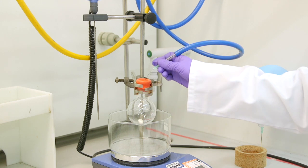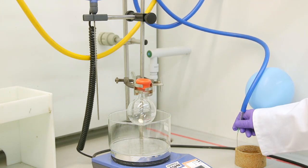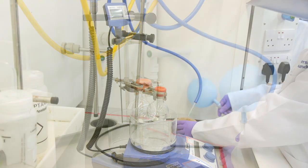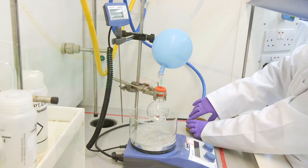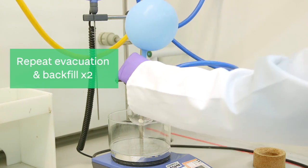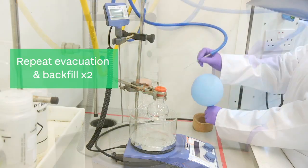Now we are going to remove the vacuum line and replace this with our nitrogen balloon. You may notice you hear a rush of air entering the flask and the balloon size decreasing. We will repeat this step of evacuating and backfilling two more times.